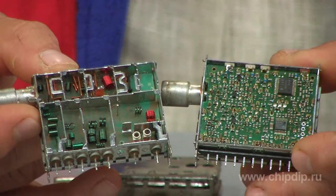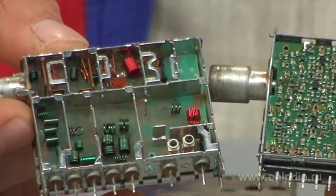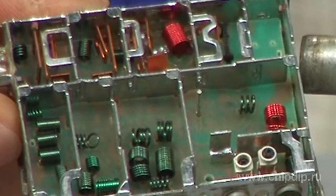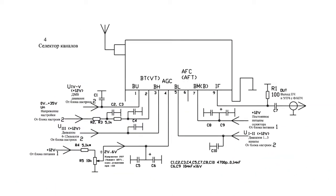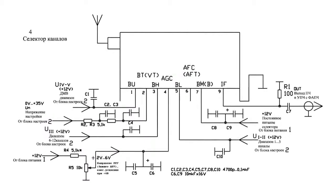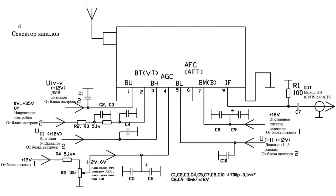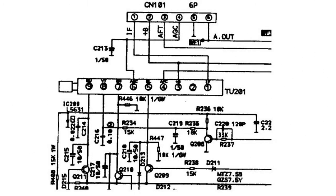A distinctive feature of modern all-wave tuners is the possibility of reception in frequency ranges designated for cable and on-air television. All intervals of received frequency in the selectors are divided into subbands VHF1, VHF2, and UHF.